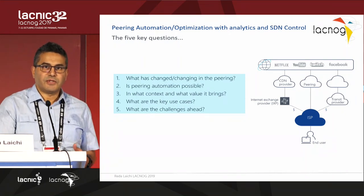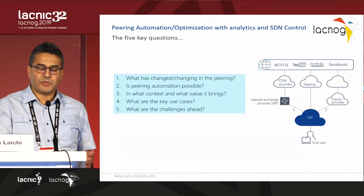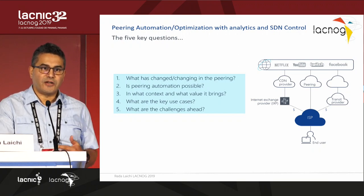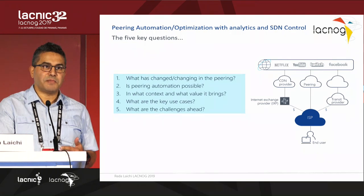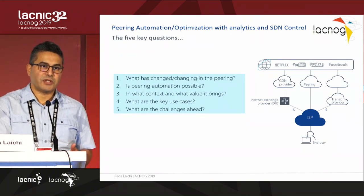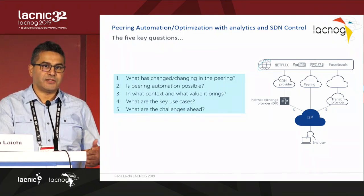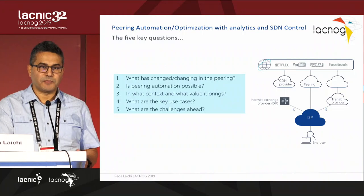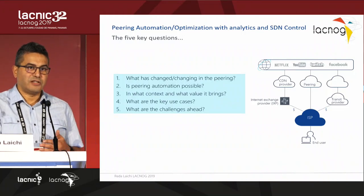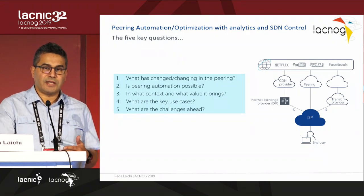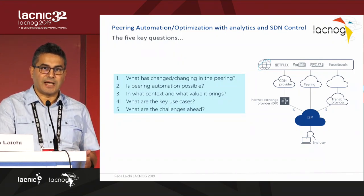Peering is not something new and it's fundamental to networks, but in the last few years a lot of factors have contributed to making peering operations very complex and challenging. This leads us to think about the possibility of applying automation and identifying use cases where automation could simplify the complex tasks of dealing with peering issues or optimizations.